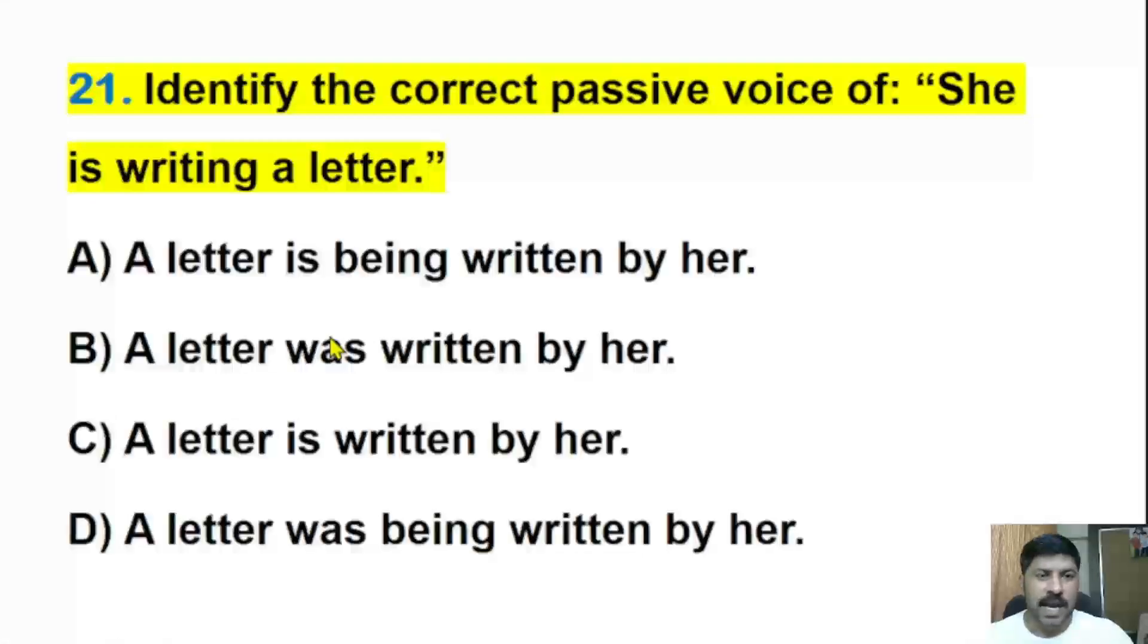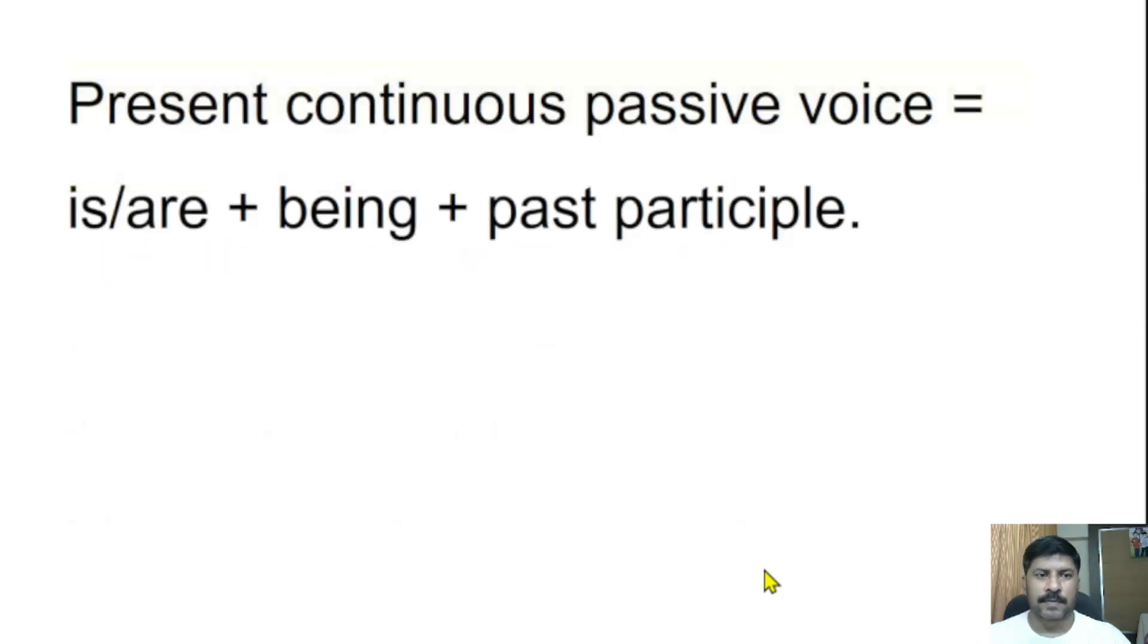Twenty-first question: Identify the correct passive voice of 'She is writing a letter.' A letter is being written by her, a letter was written by her, a letter is written by her, or a letter was being written by her. The correct answer is 'A letter is being written by her.' That is the correct passive voice. Present continuous passive voice structure is: is or are plus being plus past participle.